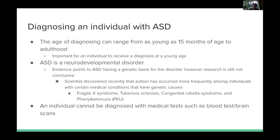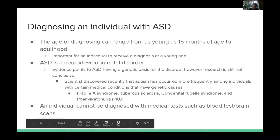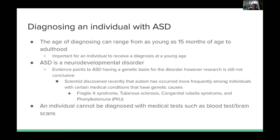When diagnosing an individual with ASD, the age of diagnosis can range from as young as 15 months to adulthood. It is important that an individual receives a diagnosis at a young age because early diagnosis allows for early intervention. ASD is a neurodevelopmental disorder with evidence pointing towards it being a genetic-based disorder, though research is still inconclusive. Scientists have discovered that autism occurs more frequently among individuals with certain medical conditions that have genetic causes, such as Fragile X syndrome, tuberous sclerosis, congenital rubella syndrome, and phenylketonuria (PKU).